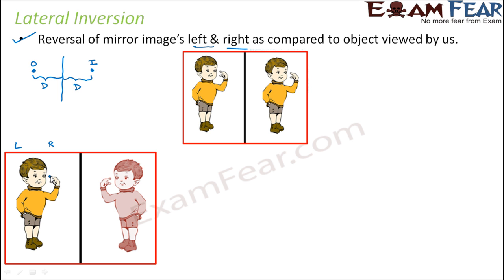Let us consider any one point — say the tip of this finger. This is my point on the object. As per the rule, the distance of this point from the mirror should equal the distance of the corresponding point of the image. In the correct picture this holds true — both distances are equal. But in the assumed case, the distance of this point and the distance of its image from the mirror are not equal, so it doesn't hold true.